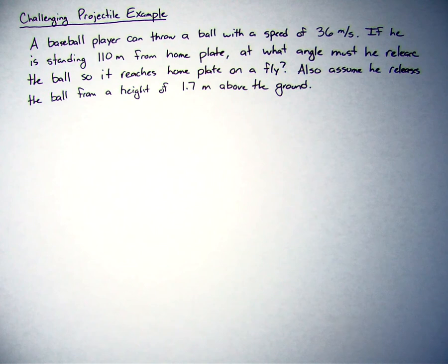So this baseball player, we know he can throw at the speed of 36 meters per second. We're going to keep that constant for this example. He's standing 110 meters from home plate, and at what angle must he release the ball so it reaches home plate on a fly? We're also going to assume that he releases the ball from a height of 1.7 meters above the ground.